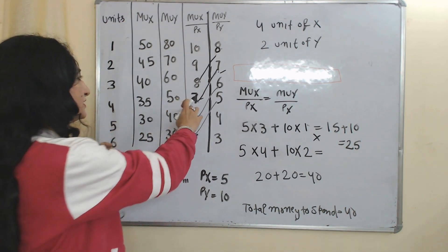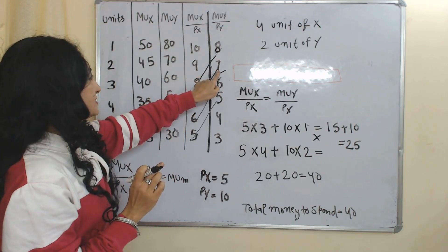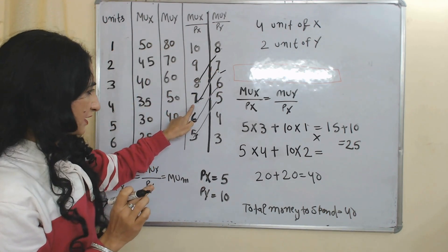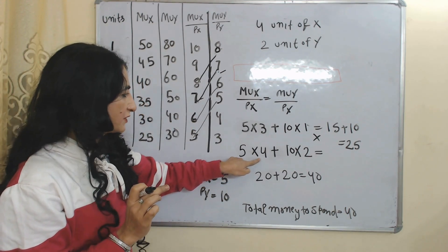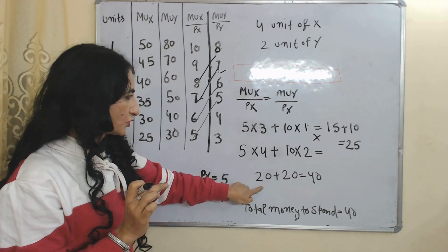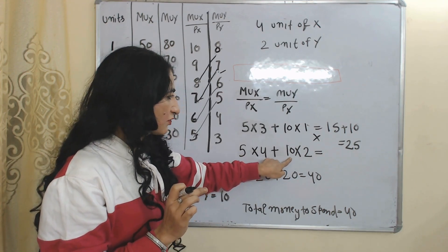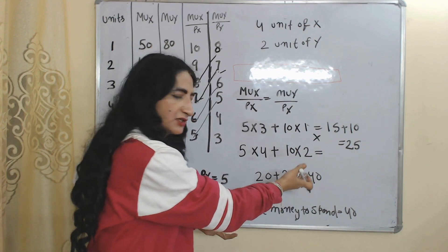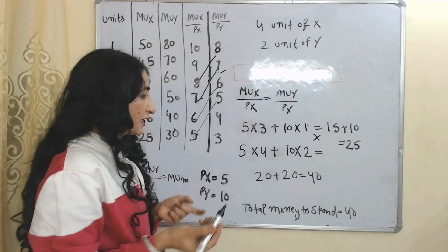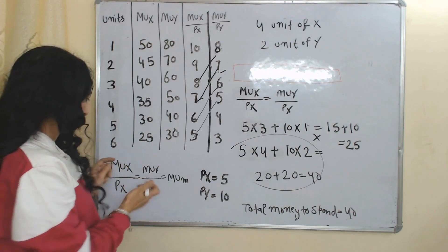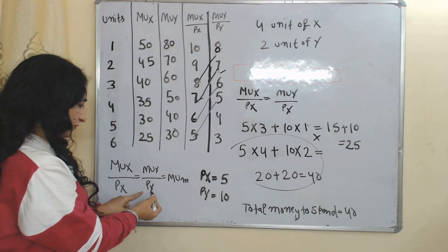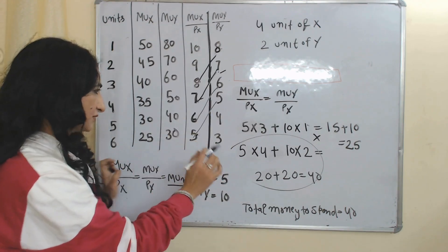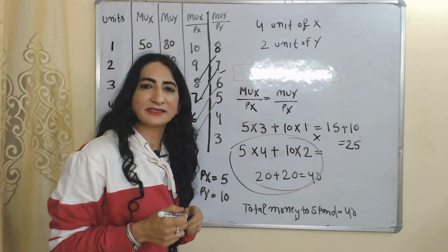We check the next combination where both are equal at 7 and 7. At this point, the consumer is buying 4 units of X and 2 units of Y. Price per unit of X is 5, so 5 × 4 = 20. Price per unit of Y is 10, so 10 × 2 = 20. Total expenditure is 20 + 20 = 40 rupees, which equals the consumer's total money to spend. All conditions are satisfied: MUX/PX equals MUY/PY, and the consumer is getting maximum satisfaction from their money. This is therefore called the consumer equilibrium point.